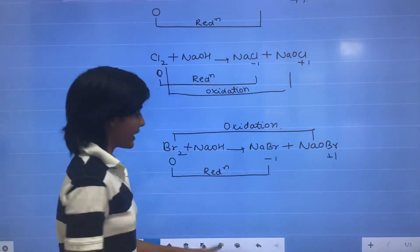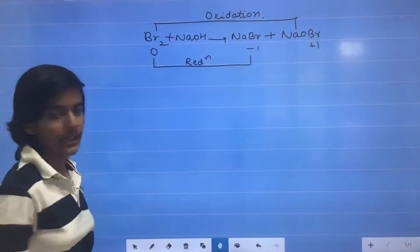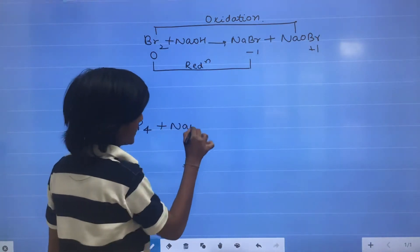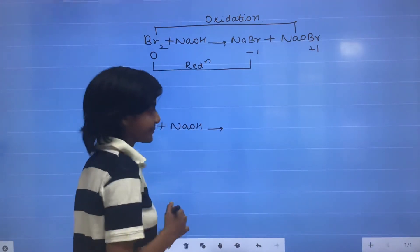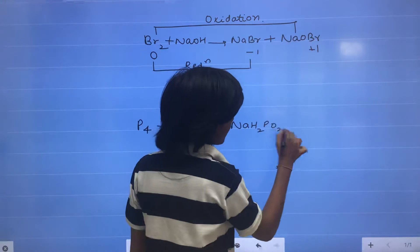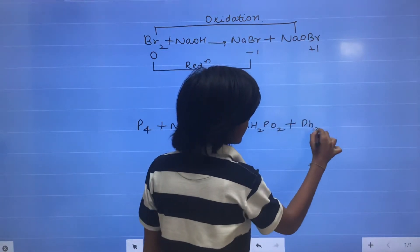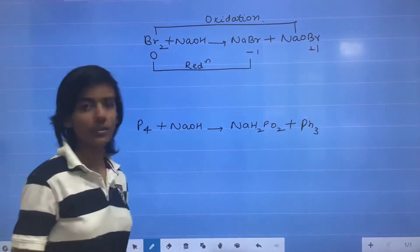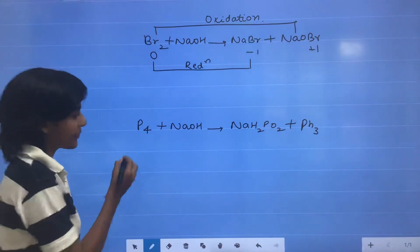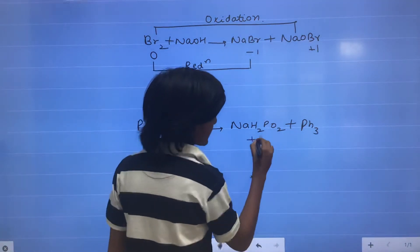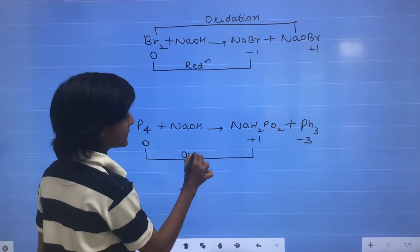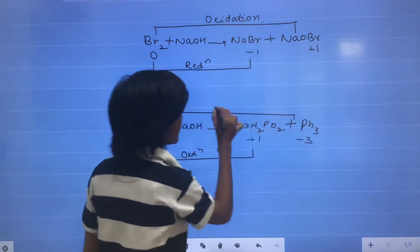Another example: when P4 reacts with NaOH, it forms NaH2PO2 (sodium hypophosphite) plus PH3 (phosphine). The oxidation state of P4 is 0, here P is plus 1 and in PH3 it is minus 3. So there is an increase in oxidation state — oxidation — and a decrease in oxidation state — reduction.